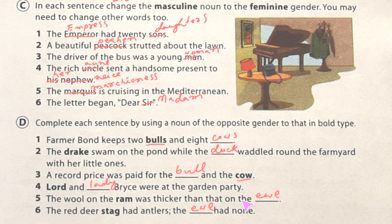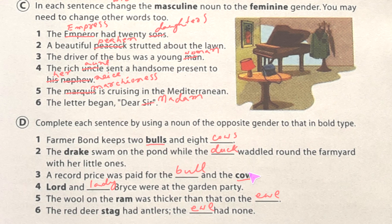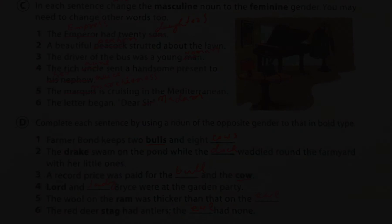So this is all for today. We have finished Brighter Grammar Book 4, page number 11, covering nouns gender. Next time we will do another exercise from this book. Bye for today.